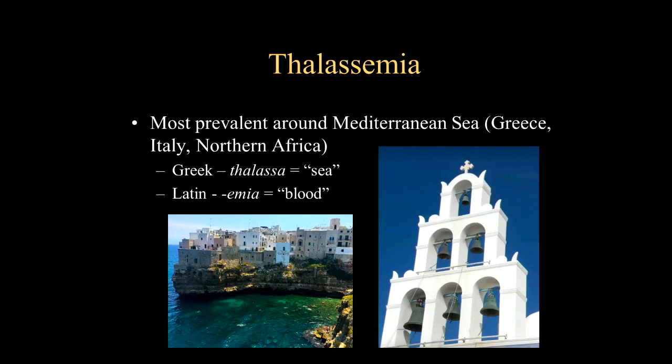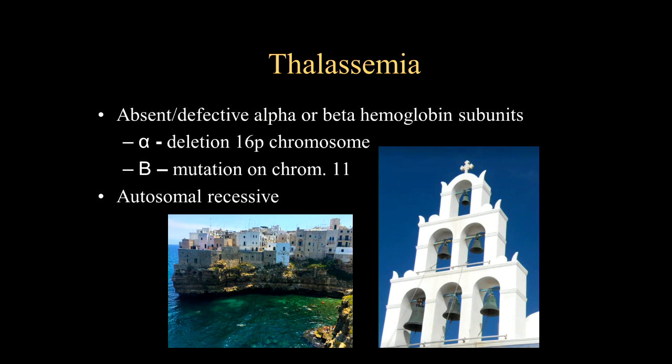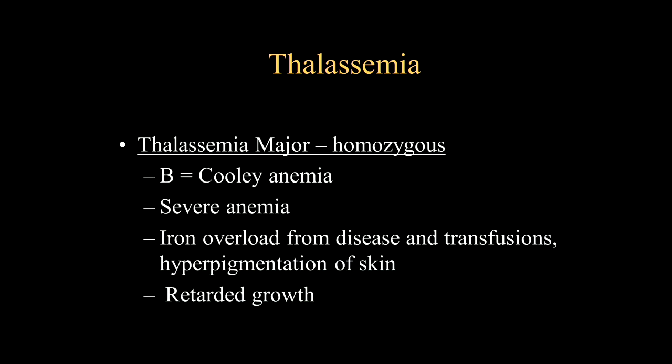Next, we're moving on to thalassemia. This is much more prevalent in patients around the Mediterranean Sea, such as Greece, Italy, and Northern Africa. Its name comes from both Greek and Latin origin, meaning blood of the sea. With this disease, there is defective genetic profiles on either the alpha or the beta hemoglobin subunits — this is also an autosomal recessive disease. When it's thalassemia major, this is the homozygous version, also known as Cooley anemia, which is a very severe anemia.